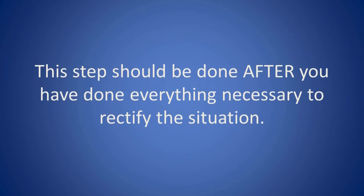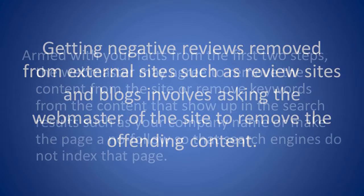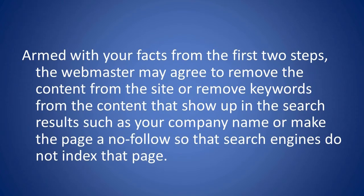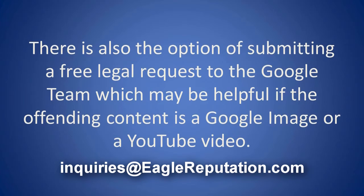Getting negative reviews removed from external sites, such as review sites and blogs, involves asking the webmaster of the site to remove the offending content. Armed with your facts from the first two steps, the webmaster may agree to remove the content from the site, or remove keywords from the content that show up in the search results — such as your company name — or make the page a nofollow so that search engines do not index that page. There is also the option of submitting a free legal request to the Google team, which may be helpful if the offending content is a Google image or a YouTube video.